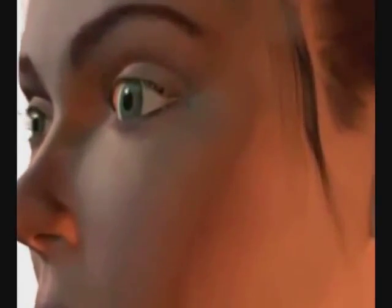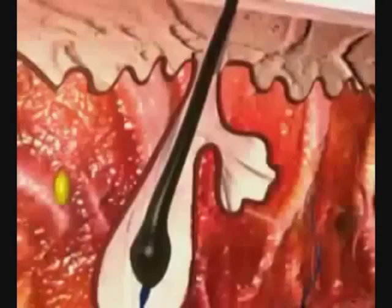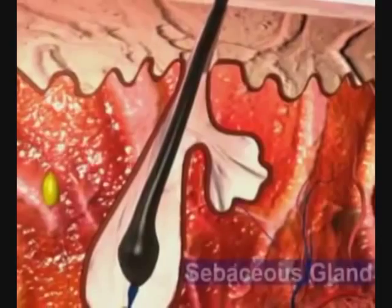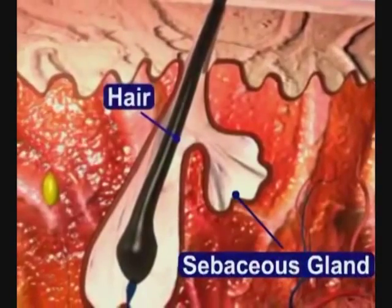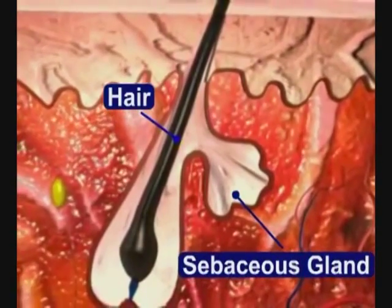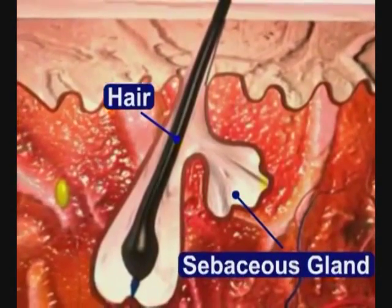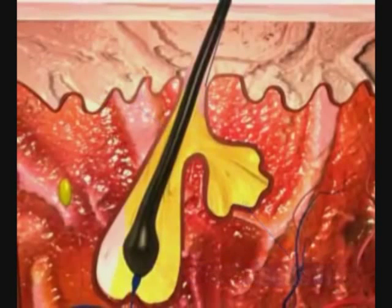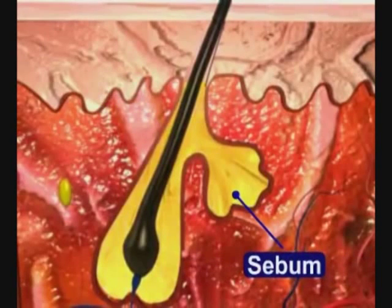The pilosebaceous unit, or PSU, of the skin consists of the sebaceous gland and the hair follicle. The sebaceous gland secretes an oily substance called sebum, which protects the hair and skin.